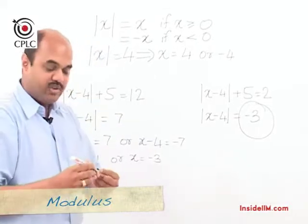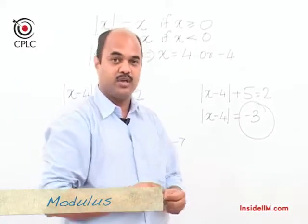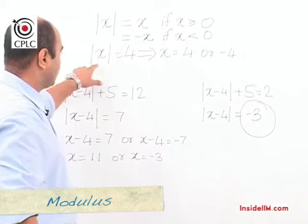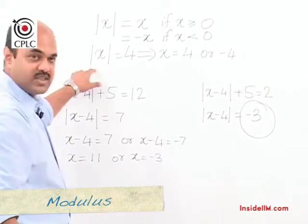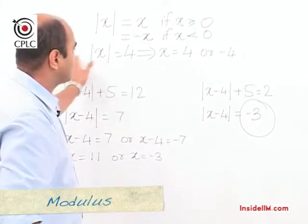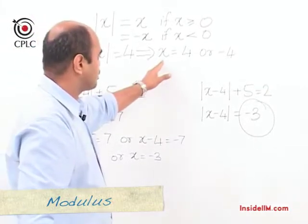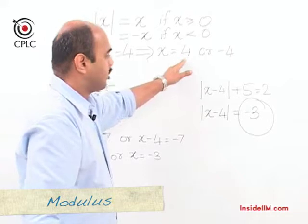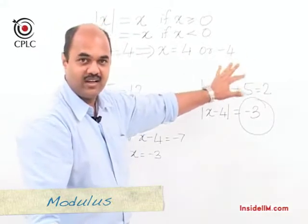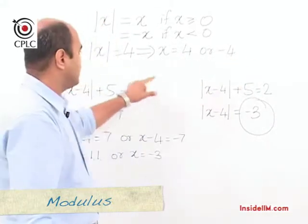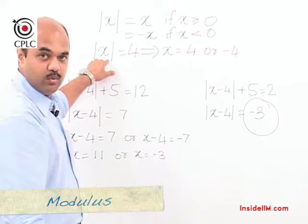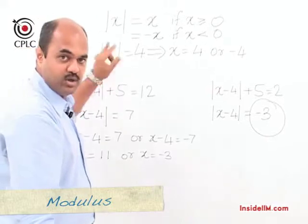So when solving questions involving modulus, the way to go about it — when you remove the mod sign, you are supposed to take both positive and negative possibilities for whatever is within the modulus sign.